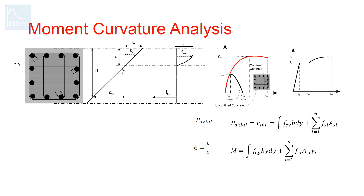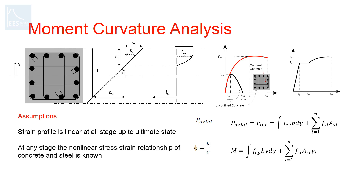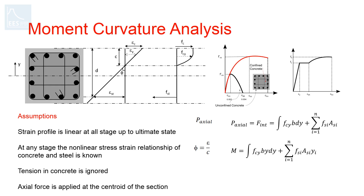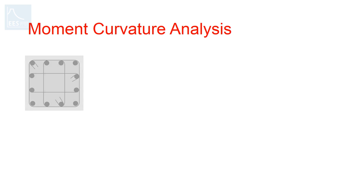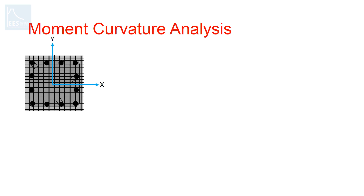Before going straight into the equations, let's see the assumptions of moment-curvature analysis. First, the strain profile is linear at all stages up to the ultimate stage. The non-linear stress-strain relationship of concrete and steel is known at any stage. Tension in concrete is ignored, and axial force is applied at the centroid of the section. The analysis can be performed using the fiber section approach, where the section is divided into layers of fibers along the local axis and each fiber area is mapped with the corresponding material model — unconfined concrete, confined concrete, and reinforcing steel.